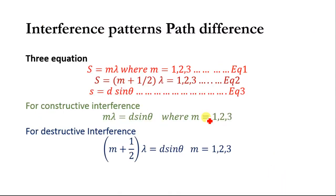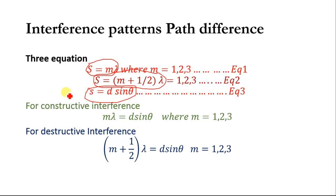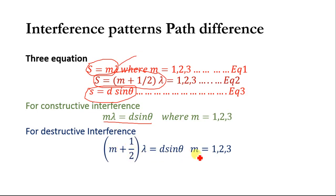We now have the equation S = D sin θ. For constructive interference, S = Mλ, so: Mλ = D sin θ, where M equals 1, 2, 3. For destructive interference, S = (M + 1/2)λ, so: (M + 1/2)λ = D sin θ, where M equals 1, 2, 3.